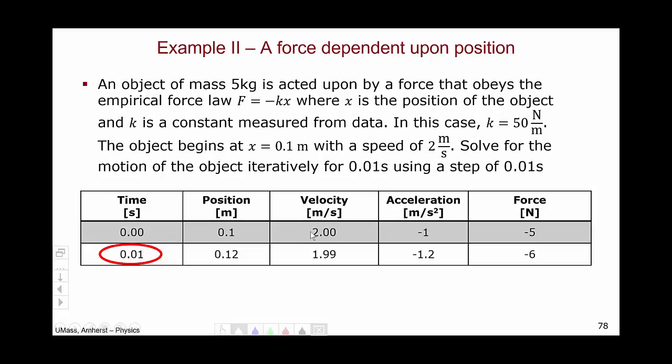Our object went from 2 meters per second to 1.99 meters per second, which is what we expect, given that at t equals 0, our velocity and our acceleration are in opposite directions.